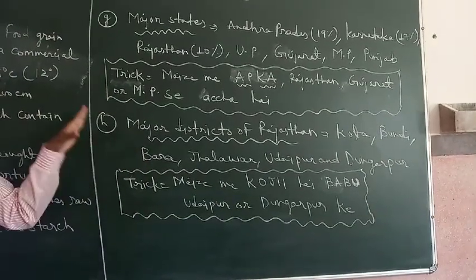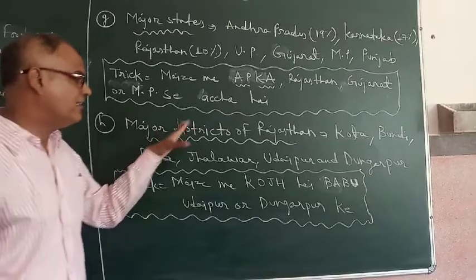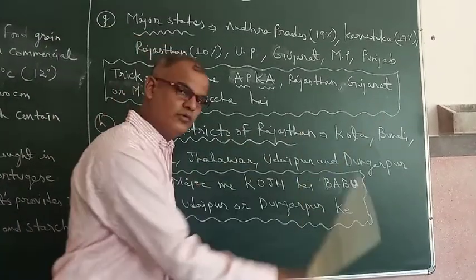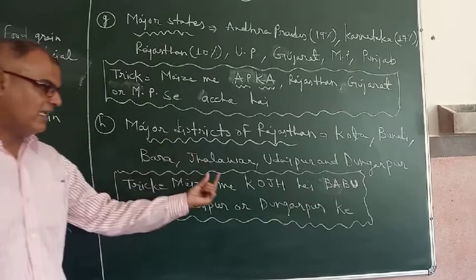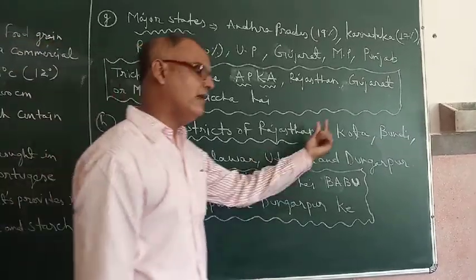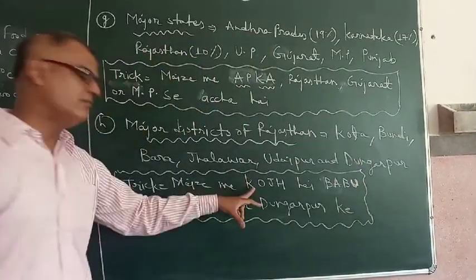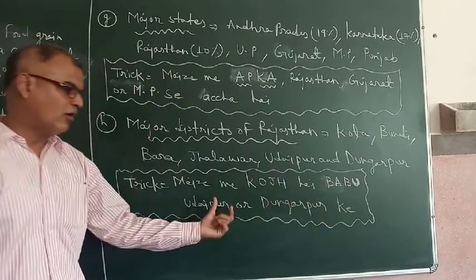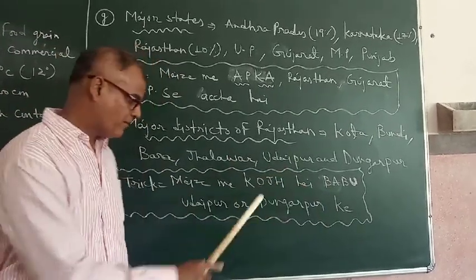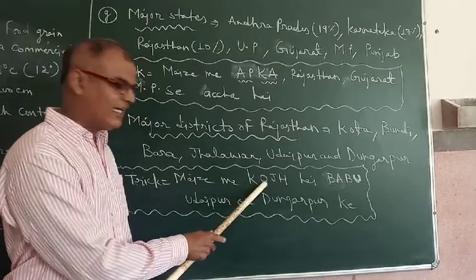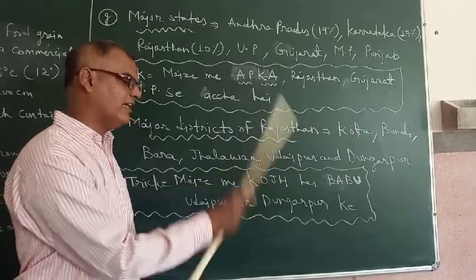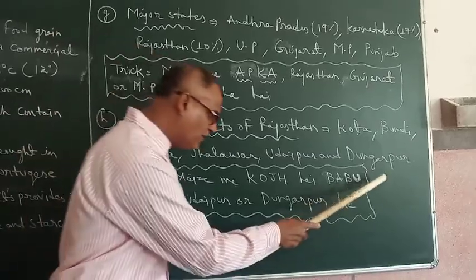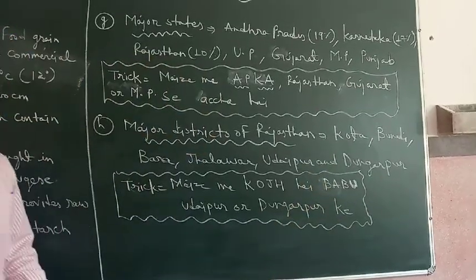Here is the trick for remembering the major Maize districts of Rajasthan — Kota, Bundi, Bara, Jalawad, Udaipur, and Dungarpur. Use the code: K-O for Kota, J-S for Jalawad, B-A for Bara, and B-U for Bundi, to memorize all the key districts easily.